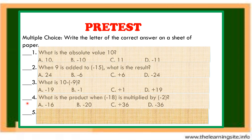Number 4. What is the product when negative 18 is multiplied by negative 2? Letter A, negative 16. Letter B, negative 20. Letter C, positive 36. Letter D, negative 36.